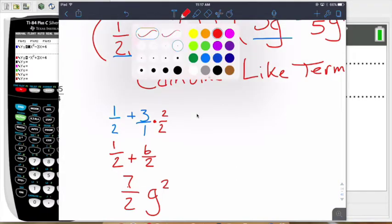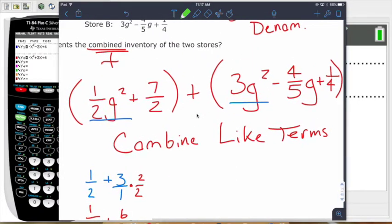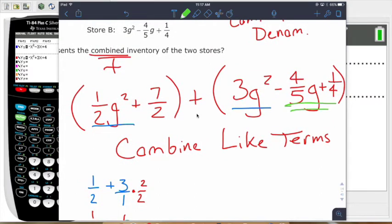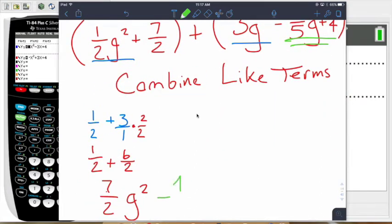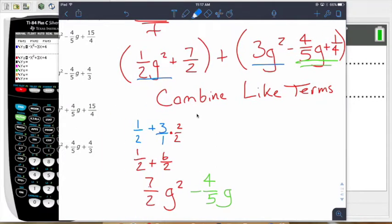Now next, let's look at the regular G's, which we only have one regular G. So we're just going to put minus 4 over 5G, and that's all we've got to do there. That one's nice and easy.